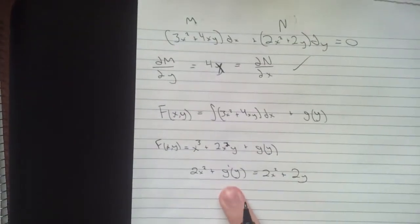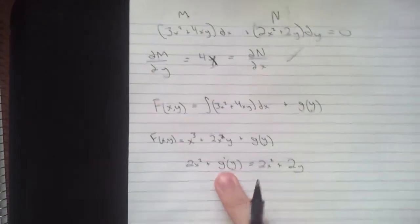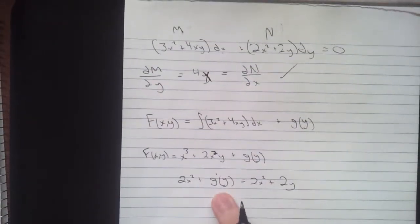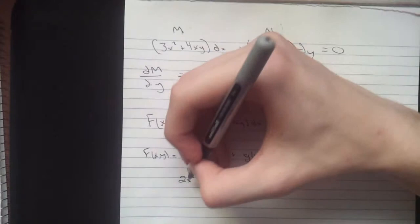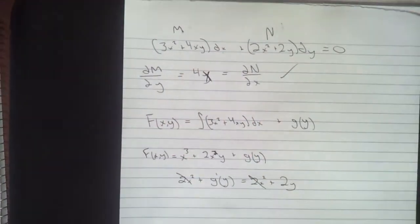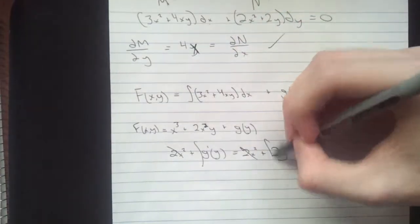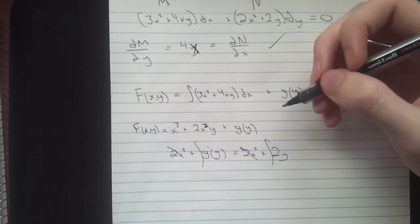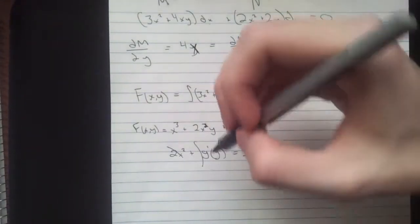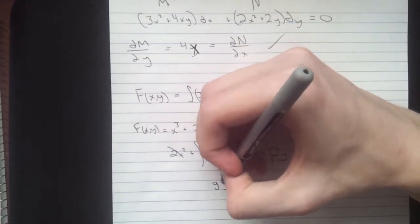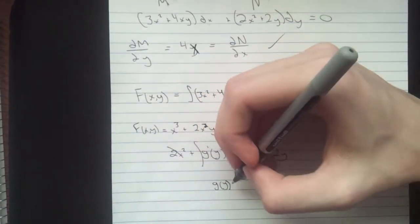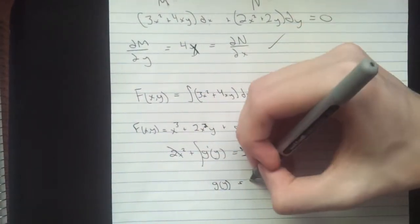And now we need g of y, we have g prime of y and so we're going to solve for that. You can see here 2x squared on both sides, those will cancel out. So now, we're just going to take the integral of this, integral of that and we get g of y equals y squared.